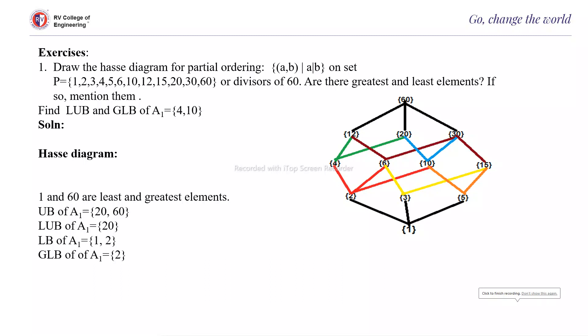We will continue from the previous topic, that is Hasse diagram. So here the question is: draw the Hasse diagram for the partial ordering (a, b) such that a divides b.